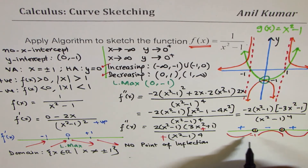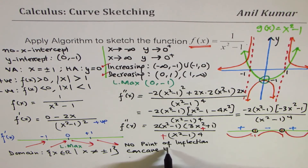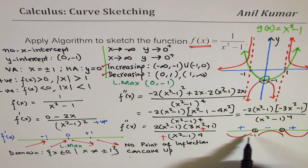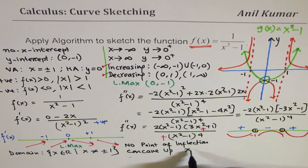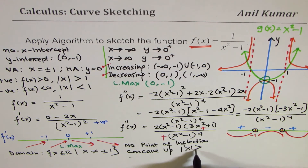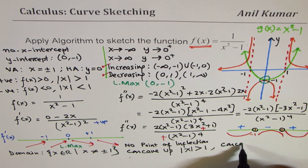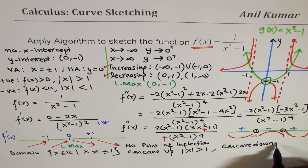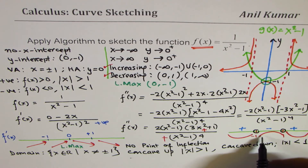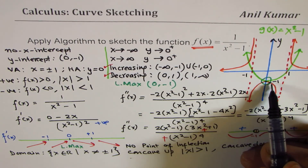The function is concave up in the interval where the absolute value of x is greater than 1. And it is concave down when the absolute value of x is less than 1. That is exactly what you see from this particular graph.